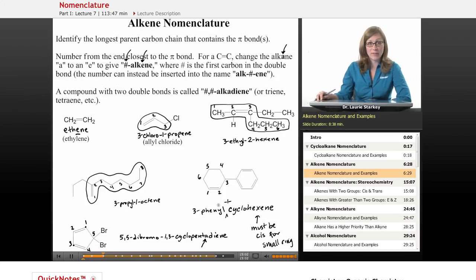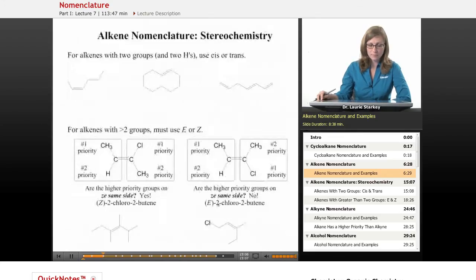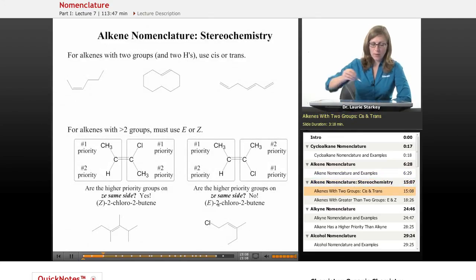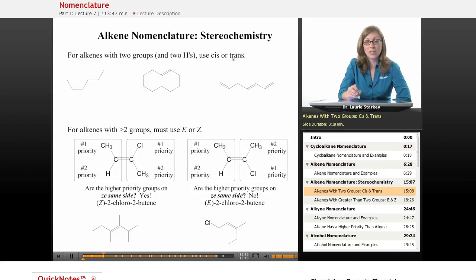But let's take a look at some examples that do have stereochemistry involved because we're going to want to include that as part of the name. Now, if you have an alkene simply with two groups and two hydrogens, then we could describe those two groups as being cis or trans. So cis means they're on the same side.